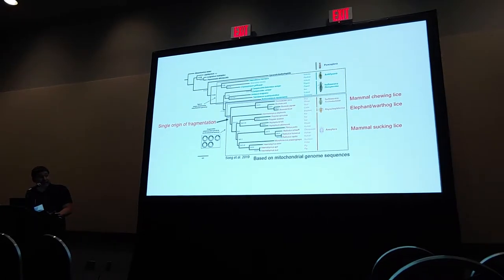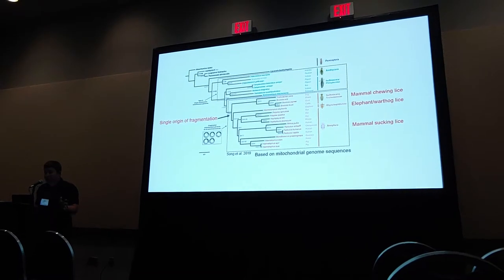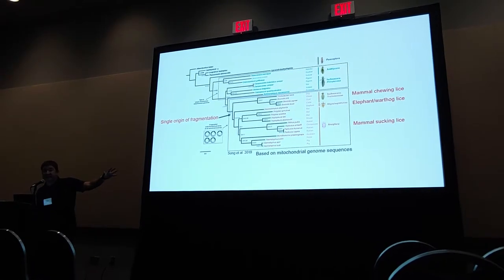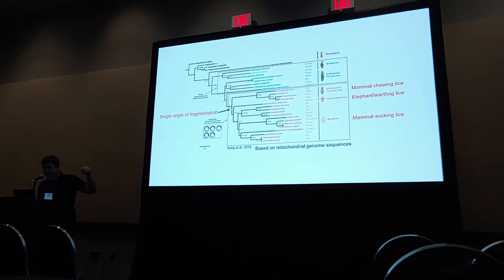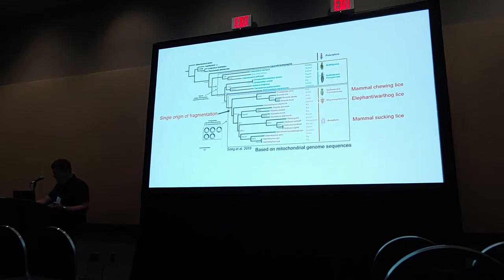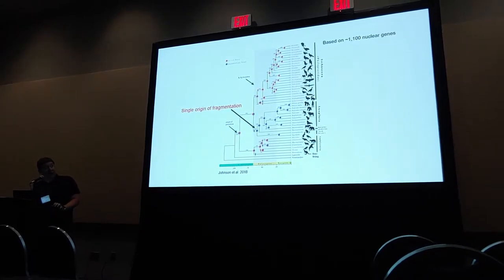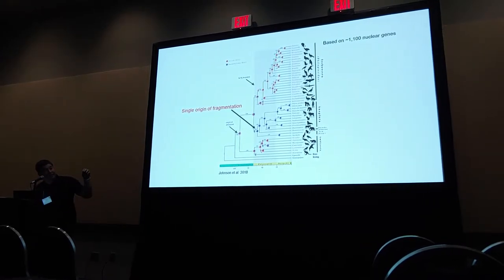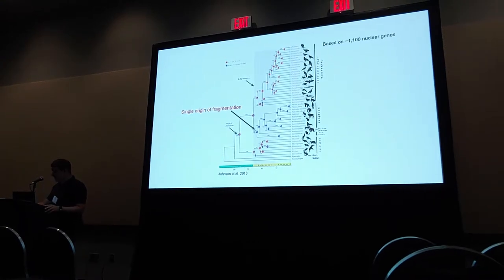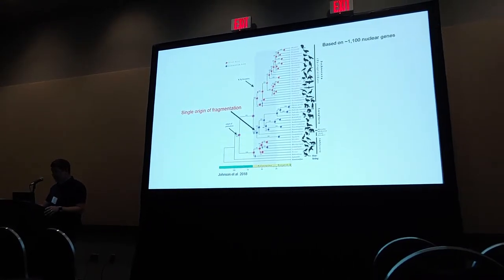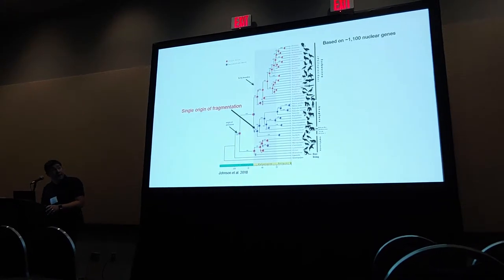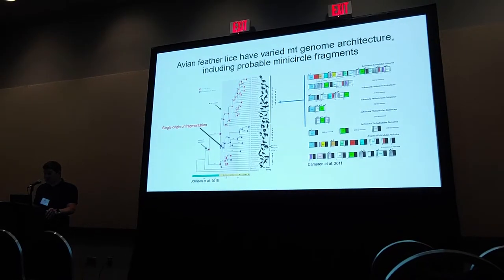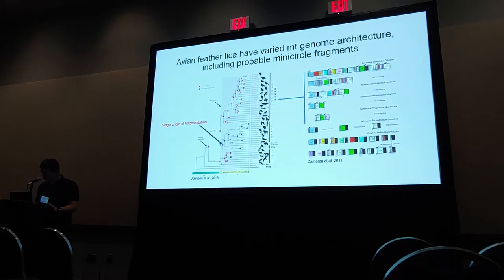A recent phylogenetic study that looked at a number of different groups of parasitic lice based on mitochondrial sequences found that all species with fragmented genomes are in the same clade — the mammal lice shown in red — suggesting a single origin of fragmentation. Another phylogeny based on over 1,100 nuclear genes, although with a slightly different topology, still recovered that clade of mammal lice, again suggesting a single origin. Nevertheless, other research suggests that bird lice may also have varied mitochondrial genome architecture and probably many-circle fragments, but we're not sure.